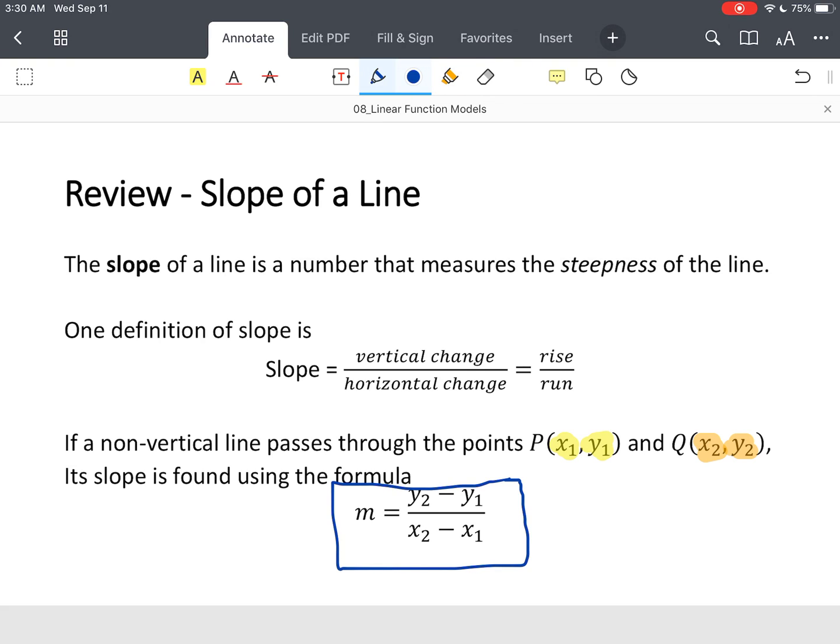So for giving two points, you can have a couple different types of slope. You can have what's called a positive slope, and I'm going to draw them here. So let's say we've got the Y axis, X axis.